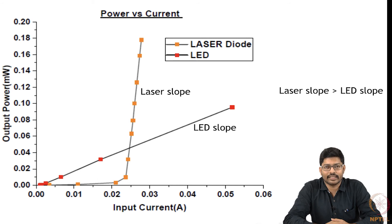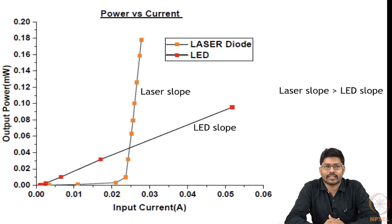To conclude, we have characterized the light emitting diode and laser diode. Looking at the I versus V plot, it looks quite similar for both optical sources. However, the power versus current plots reveal two key differences: first, the laser diode requires a threshold current to start lasing action, whereas the LED requires no threshold current and power starts increasing from zero current. Second, the slope efficiency of the laser diode is far greater than that of the LED.